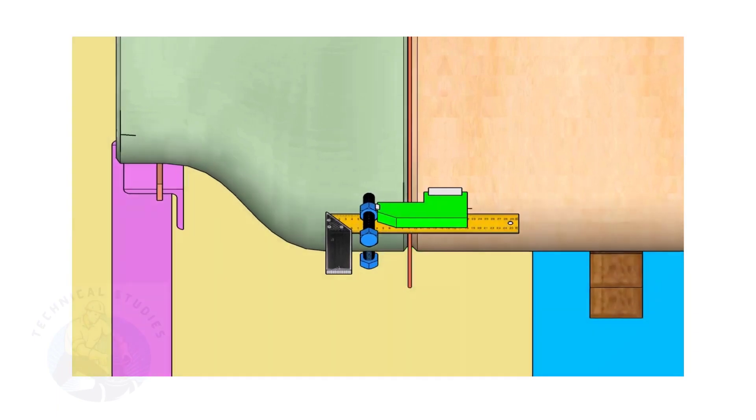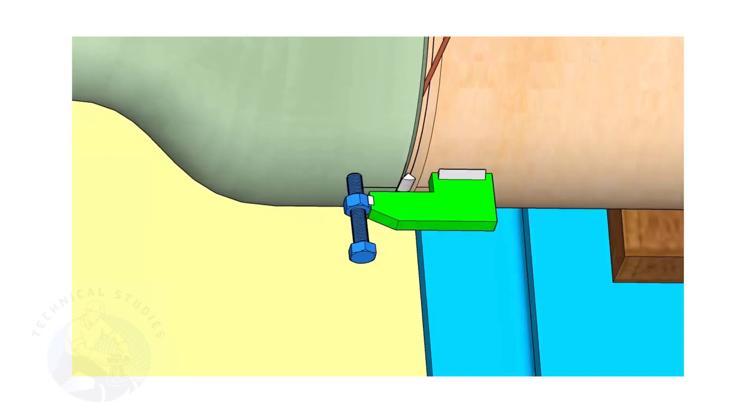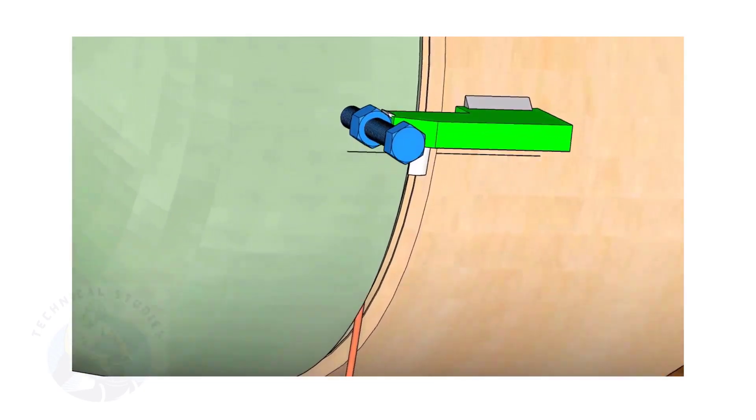Correct the straightness of the joint on both sides. If required, remove the gap rod. Tack weld on both sides.